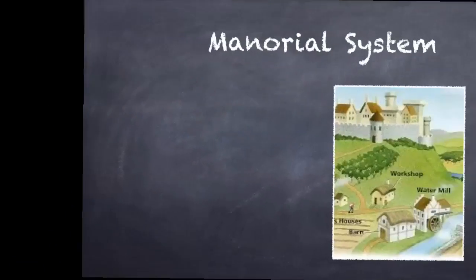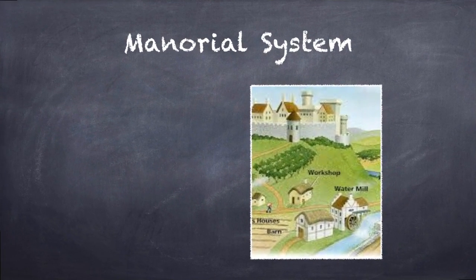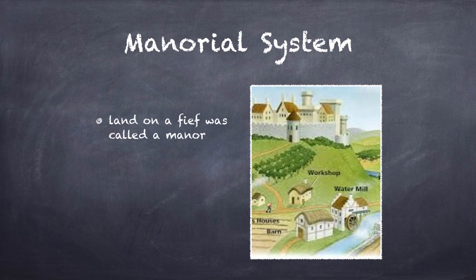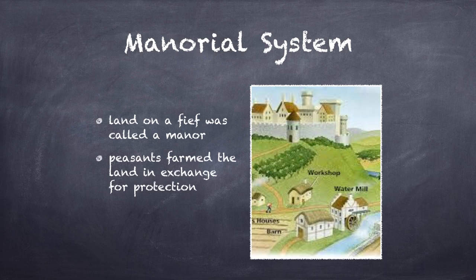Now let's talk about that land — the land that's so important. The land, usually on a fief, was called a manor. That manor was made up of workshops, the manor house — which a lot of times would become a castle — mills, and fields for farming. The farming was very important. The people who did the farming were peasants, and they farmed the land in exchange for protection.